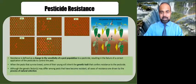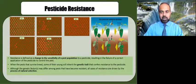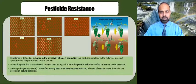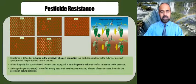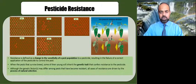Resistance to pesticides is a serious and growing problem. Worldwide, more than 600 species of pests have developed some level of pesticide resistance. If resistance to a particular pesticide or family of pesticides evolves, those products can no longer be effectively used, reducing the options available for pest management. Resistance is defined as a change in the sensitivity of a pest population to a pesticide, resulting in the failure of a correct application to control the pest. Resistance can develop when the same pesticide or similar ones with the same mode of action are used repeatedly.